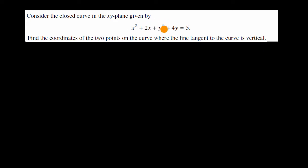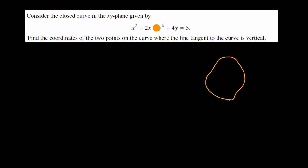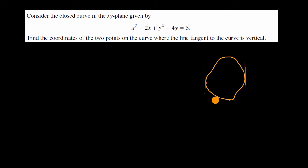I don't know what the exact shape of this closed curve is, but if I were to draw some type of a closed curve, maybe it looks something like this. This one also has two points where the tangent line is vertical. One point would be right over there, and another point would be right over there. How do we figure this out?